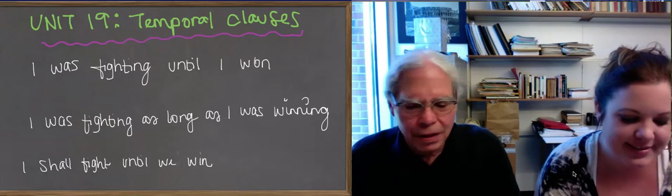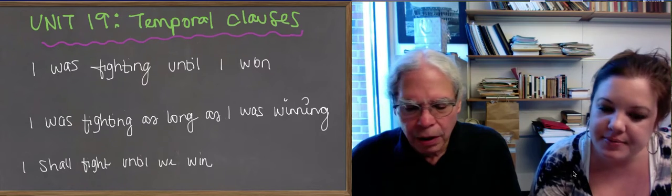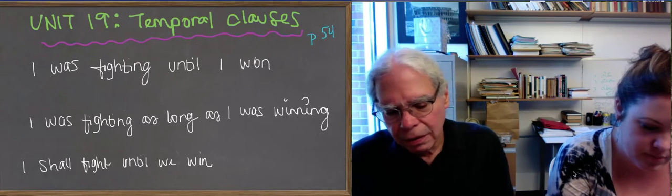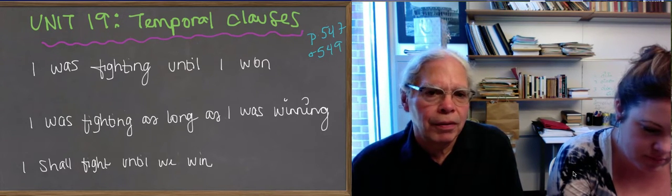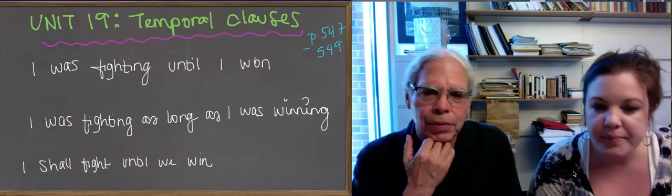So we're in unit 19, the discussion of temporal clauses which is in the book on pages 547 and 548, and 549. Let's not look at those pages yet, let's look at these English sentences that he's written on the blackboard.